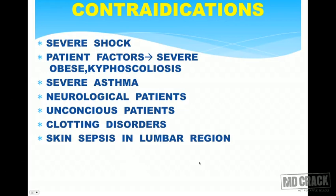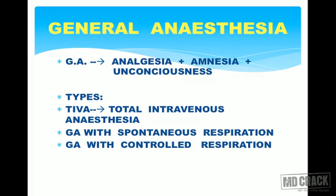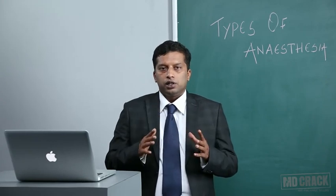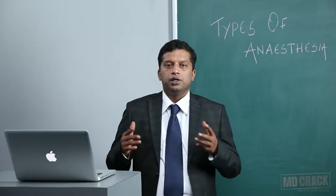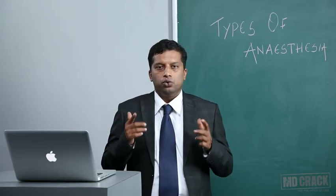Disadvantages of epidural anesthesia: difficulty in confirming needle placement in the epidural versus subarachnoid space, which comes only with experience; the block takes 5–10 minutes to develop, whereas spinal anesthesia works almost immediately; onset of action takes around 10–15 minutes. Overall, as an adjuvant to general anesthesia, epidural anesthesia is advantageous because it avoids the stress response, maintains spontaneous breathing, and allows patient-controlled analgesia through the catheter — so the patient is master of his own pain.